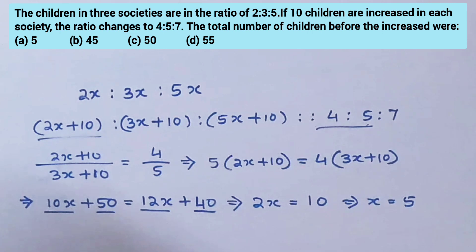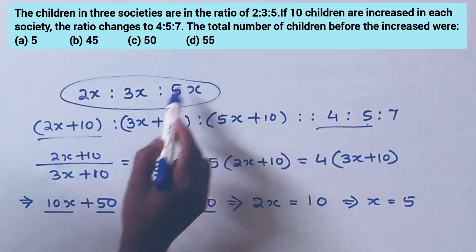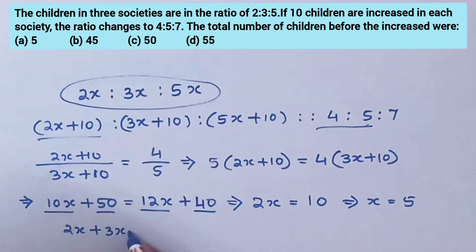Therefore x = 5. The total number of children before the increase is 2x + 3x + 5x = 10x = 50.